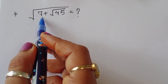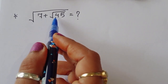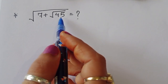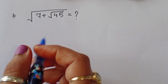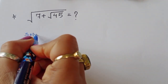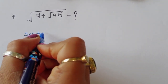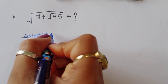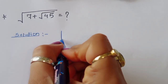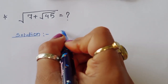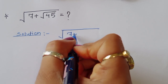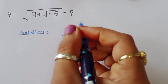We are given square root of 7 plus square root of 45, and we have to find out the value of this. Let's see the solution: square root of 7 plus square root of 45.